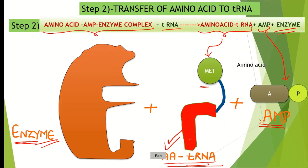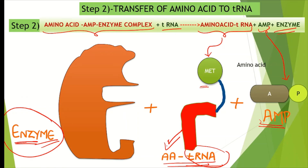For 20 different kinds of amino acids, we have 20 different kinds of transfer RNA and 20 different kinds of enzymes in the cytoplasm. This is how we get our charged transfer RNA.